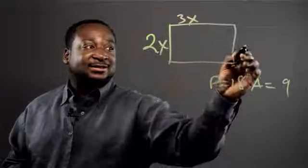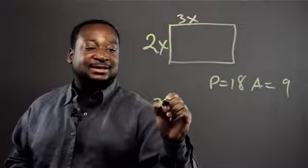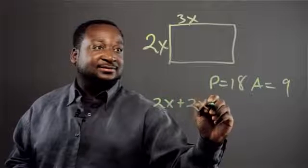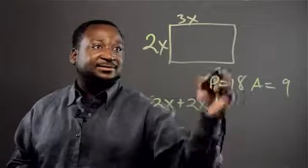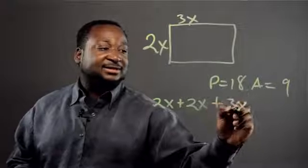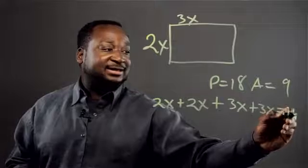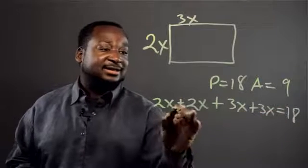We know that this side is going to be 2x also so that's 2x plus 2x plus 3x plus 3x equals 18.